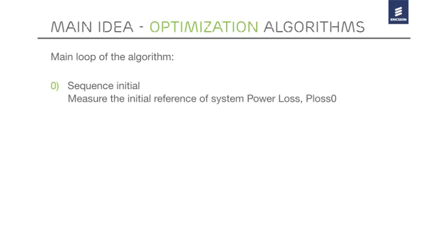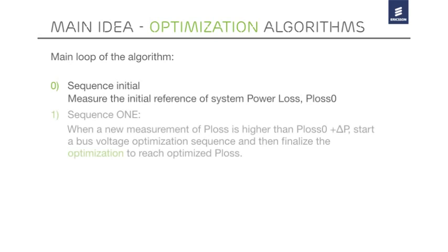The algorithm is not limited to that function. It could also monitor other values such as power dissipation. When the reference is established, we then start the first cycle, during which we keep measuring the power loss. When the delta P increases from the initial PLOS value,